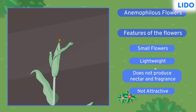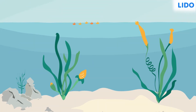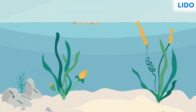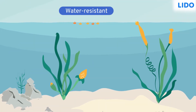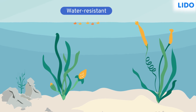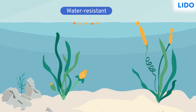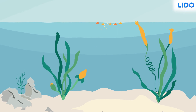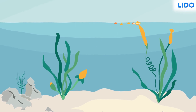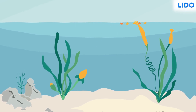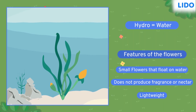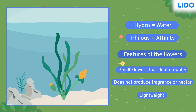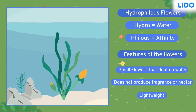But what about plants in water? Aquatic plants produce small, lightweight flowers that are water resistant and can float on water. Sometimes the male flowers float on the water and reach the female flowers and exchange the pollen grains. As 'hydro' means water and 'philous' means affinity, such flowers are called hydrophilous flowers.